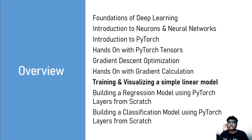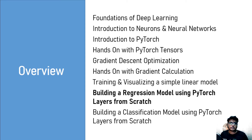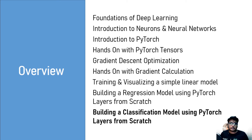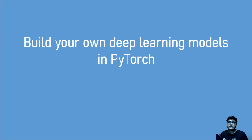Once we have all that knowledge about deep learning, PyTorch, tensors, gradient descent, and everything, we are going to dive deeper into neural network related topics — building a regression model from scratch using PyTorch layers, and also building a classification model from scratch using PyTorch. Basically, once you are done with everything, you will have all the skills necessary to build your own deep learning models.